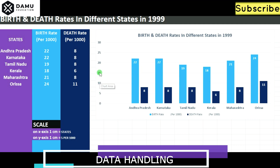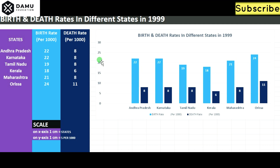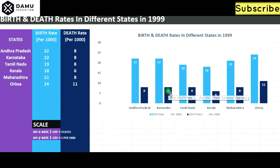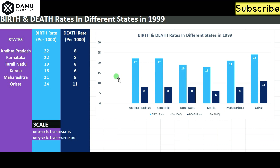The scale is written here. For Andhra Pradesh, birth rate is 22, so we draw the bar up to 22 divisions. For the death rate of 8, that's three divisions above the five mark. For Karnataka, the values are the same — birth rate 22 and death rate 8. For Tamil Nadu, birth rate is 19; since each division is 0.5, we go to the 19th division.